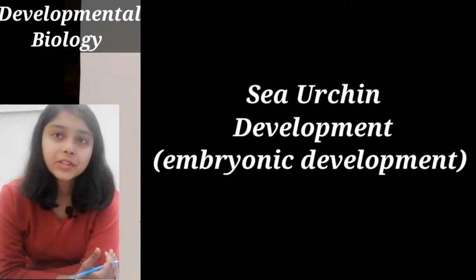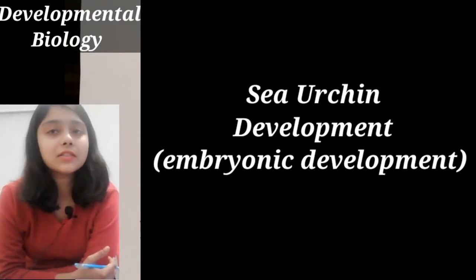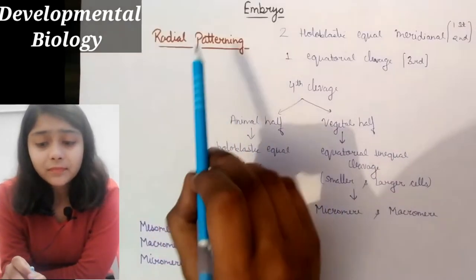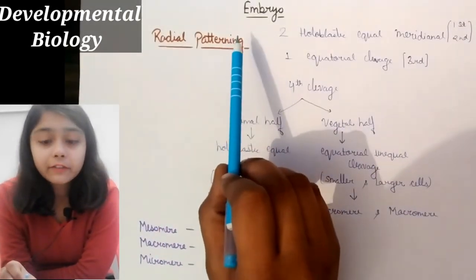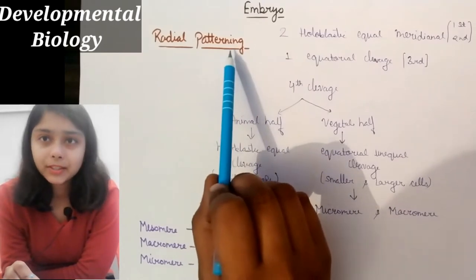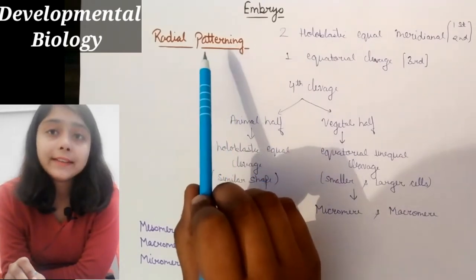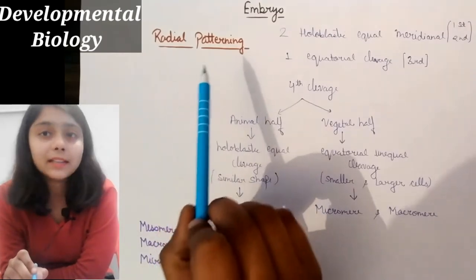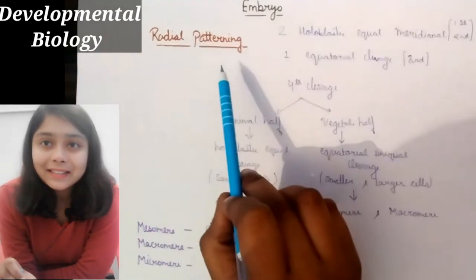Sea urchin's fertilization is external and sea urchin's embryonic development is external. In sea urchin embryonic development, radial patterning starts. Radial patterning — I have already covered the basics of what is happening.